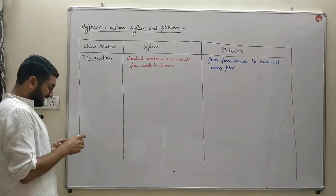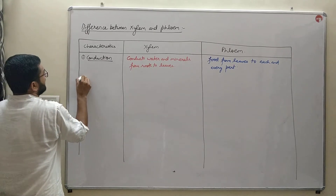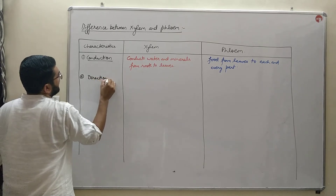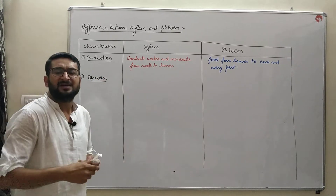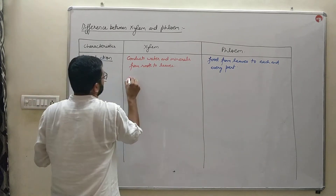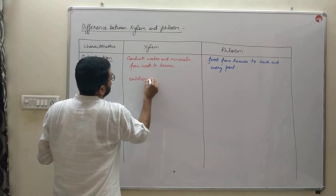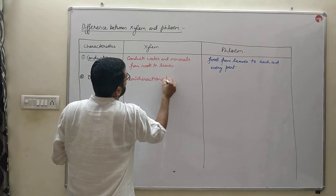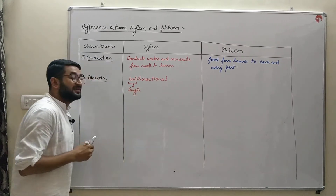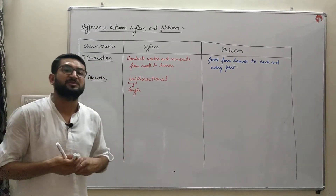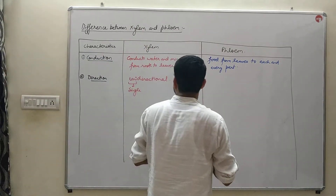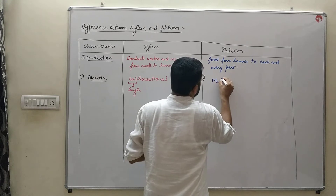The second parameter on which we differentiate xylem and phloem is direction of transport. Xylem transports in a unidirectional manner — the material is transported only in a single direction, that is the upward direction. Whereas the transportation in phloem is multidirectional.